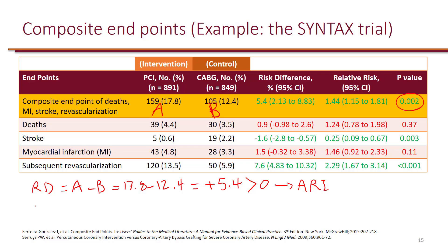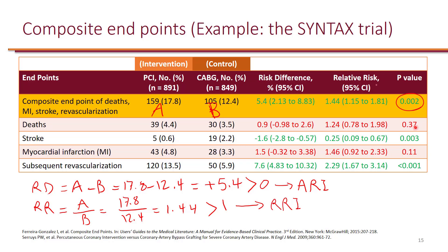The relative risk is 1.44 — calculated as 17.8 divided by 12.4 — which is greater than one, indicating a relative risk increase. For the risk difference confidence interval, you don't want it to cross zero, and it went from positive 2.13 to positive 8.83 — it did not cross zero. For the relative risk confidence interval, you don't want it to cross one, and it went from 1.15 to 1.81 — also statistically significant. The p-value is consistent with these findings.